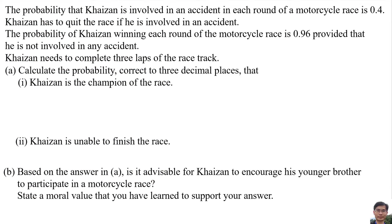The probability that Kaizan is involved in an accident in each round of a motorcycle race is 0.4. Kaizan has to quit the race if he is involved in an accident. The probability of Kaizan winning each round of the motorcycle race is 0.96, provided that he is not involved in any accident. Kaizan needs to complete 3 laps of the race track.